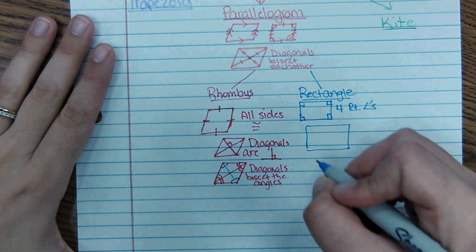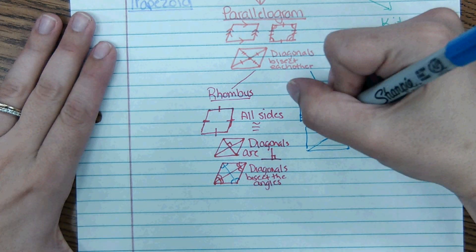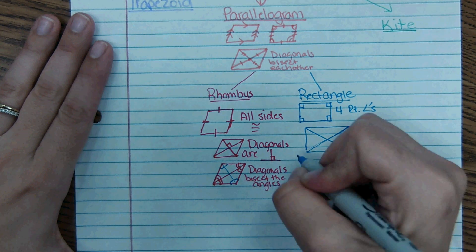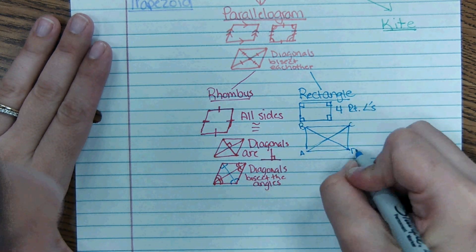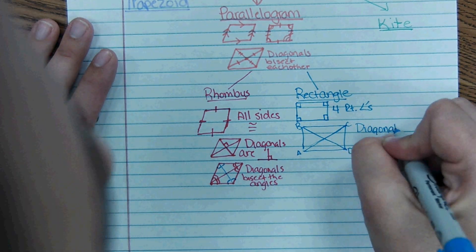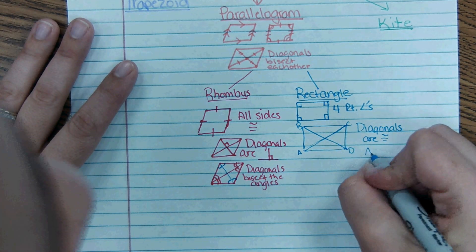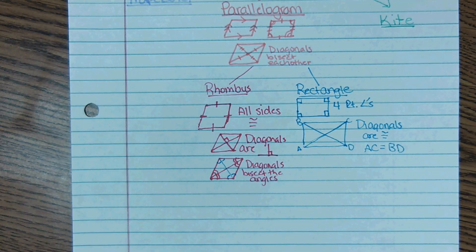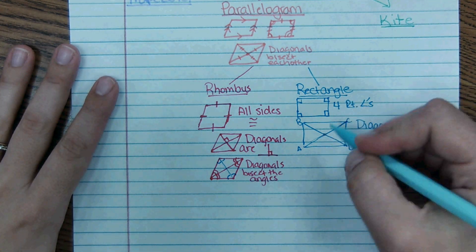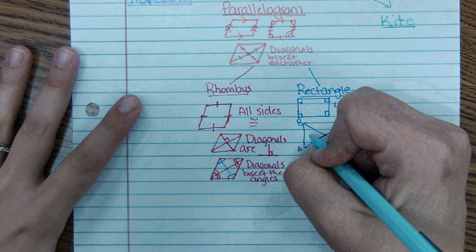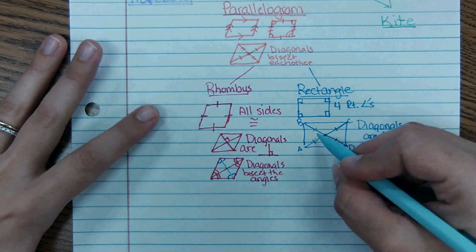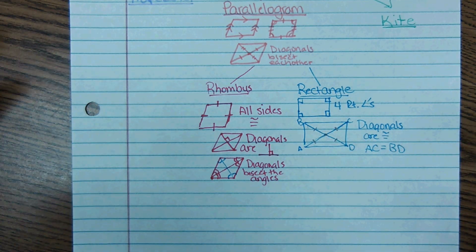For a rectangle, we also look at the diagonals. The diagonals of a rectangle are congruent — segment AC is congruent to segment BD. They still bisect each other, so this half equals that half. But because the diagonals are congruent, all four segments created by the intersection are now the same measure, so if you know the length of one, you know them all.